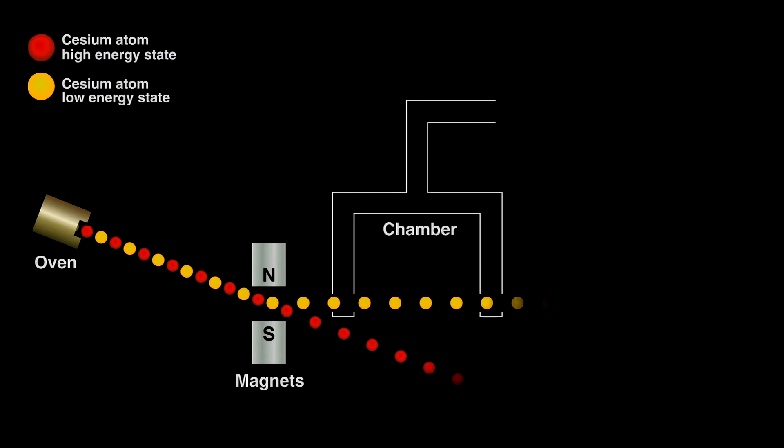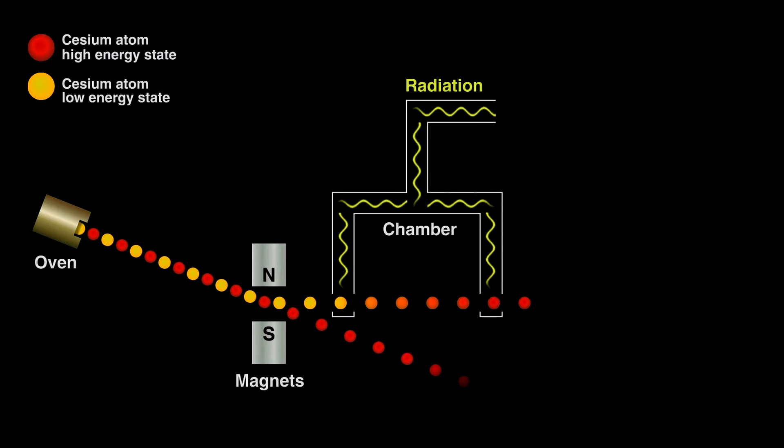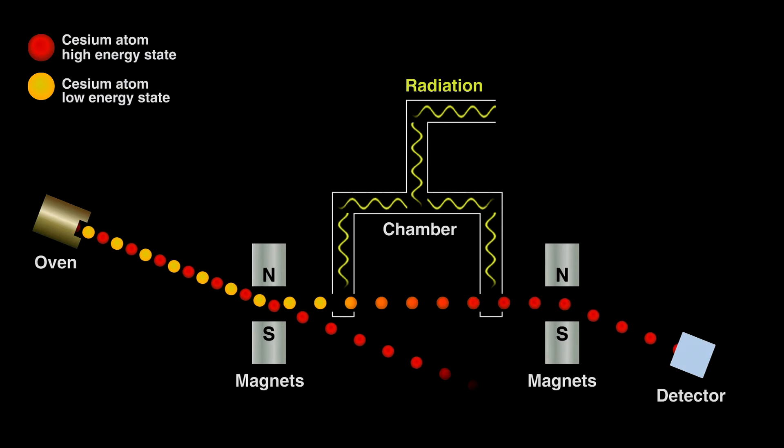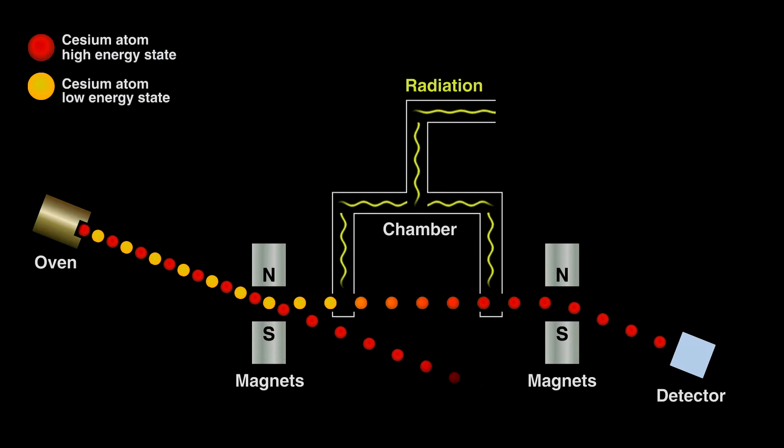Inside the chamber, we bombard the ions with just the right wavelength radiation to make them jump to higher energy. As these gaseous ions leave the chamber, they pass through another magnet that directs high energy ions toward a detector, this time discarding any lower energy ones. The detector converts the arriving ions to a current.